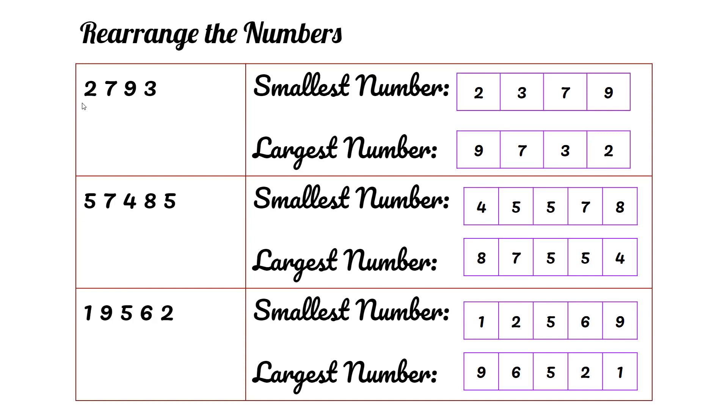Rearrange the numbers. 2,793. The smallest number is 2, then 3, then 7, then 9. So the smallest number is 2,379.